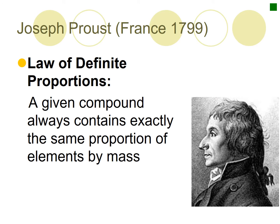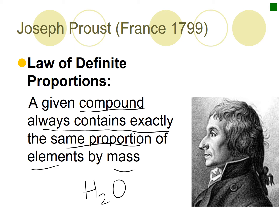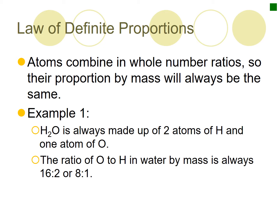The first one was the law of definite proportions, named by Joseph Proust in 1799. What he stated is that for any specific compound, they always have the exact same proportion of elements by mass. For water, H2O, by mass will always have proportionally the same percentage of hydrogen compared to the whole compound, and the same with oxygen. If it's a different percentage, it will be a different substance. Atoms combine in whole number ratios, so their proportions by mass will always be the same.